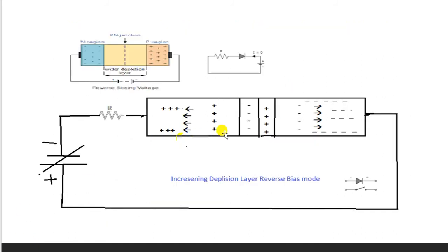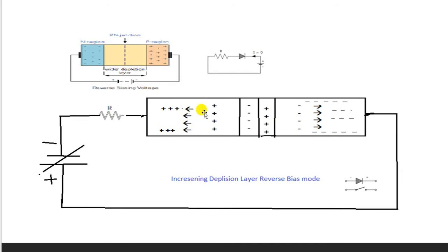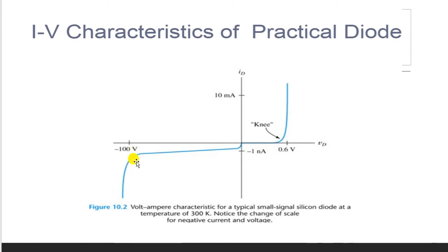In reverse biasing, the negative terminal of the battery is connected to the anode and positive to the cathode. Holes are attracted to the negative terminal and electrons to the positive terminal, so only a small minority charge carrier current flows. Some electrons dislocate electron-hole pairs, causing those carriers to gain velocity and collide with other ions, generating a sharp increase in reverse current — this is known as the breakdown potential.